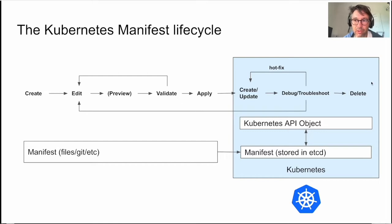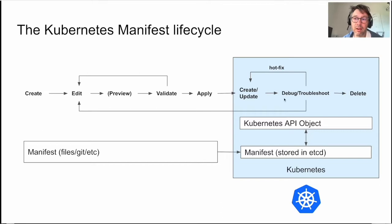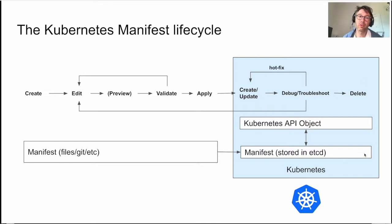At the end of the day — or the week, month, or year — you'll delete the object and it'll be gone from your cluster. That's the high-level lifecycle for your manifests, both outside your cluster as files, and inside your cluster stored within Kubernetes.